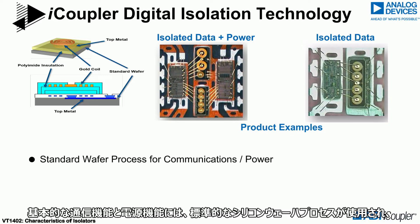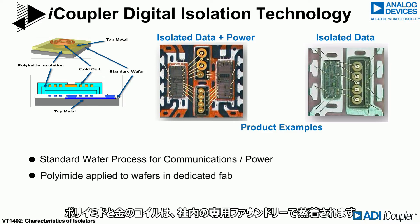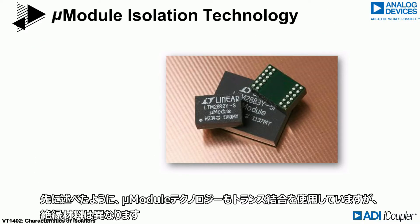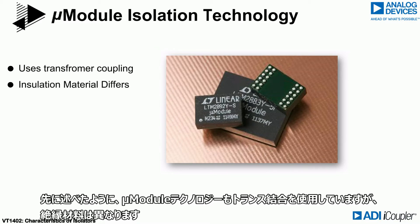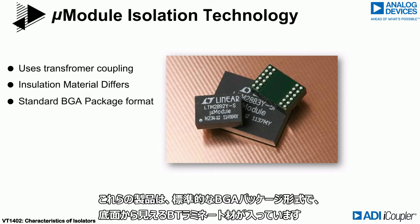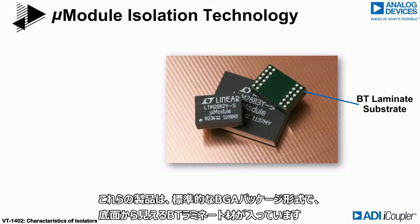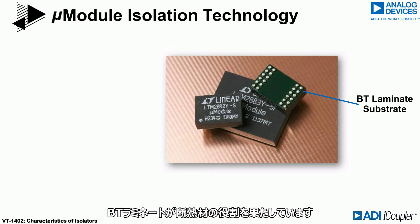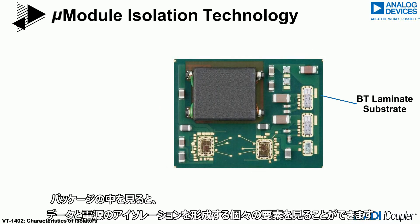Standard silicon wafer processes are used for the basic communications and power functions, with the polyimide and gold coils deposited in a dedicated internal foundry. As noted previously, micromodule technology also uses transformer coupling but a different insulation material. These products are in a standard BGA package format that contains a BT laminate material, which is visible from the bottom. The BT laminate serves as the insulation.